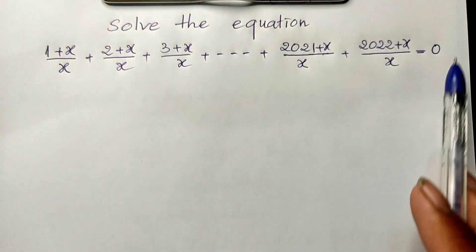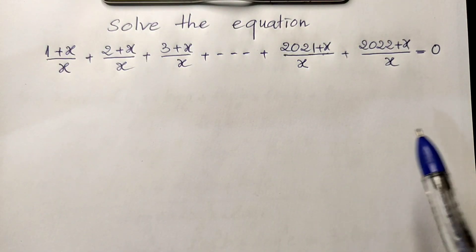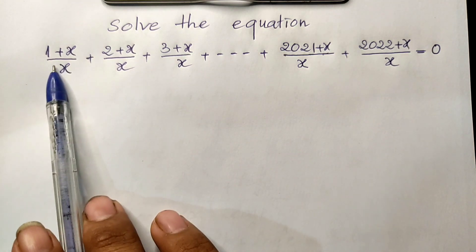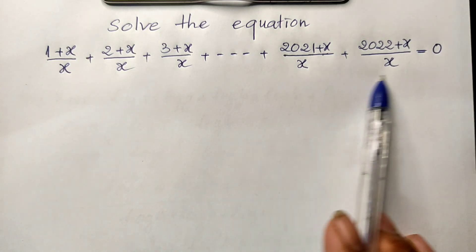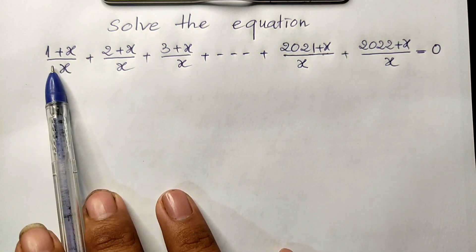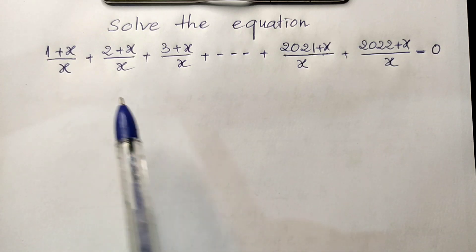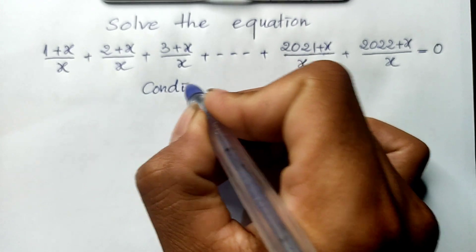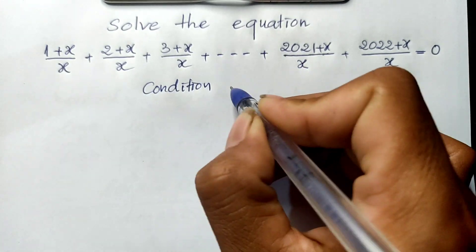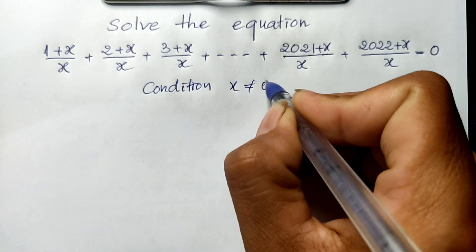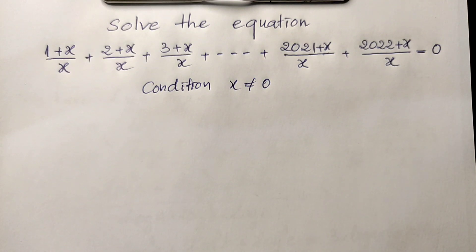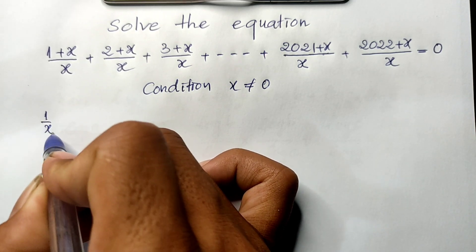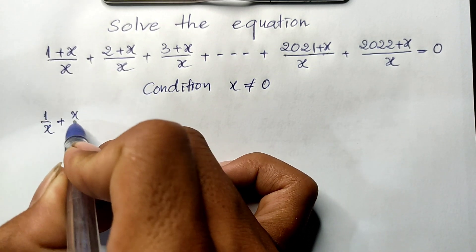To solve this equation, first we must take the condition. You see the denominator contains the variable h throughout, so the first condition is: h is not equal to 0.